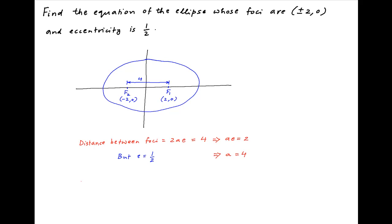Now the semi-minor axis B is obtained from the equation B² = A²(1 - E²), which is equal to 16 times (1 - 1/4), which equals 12.